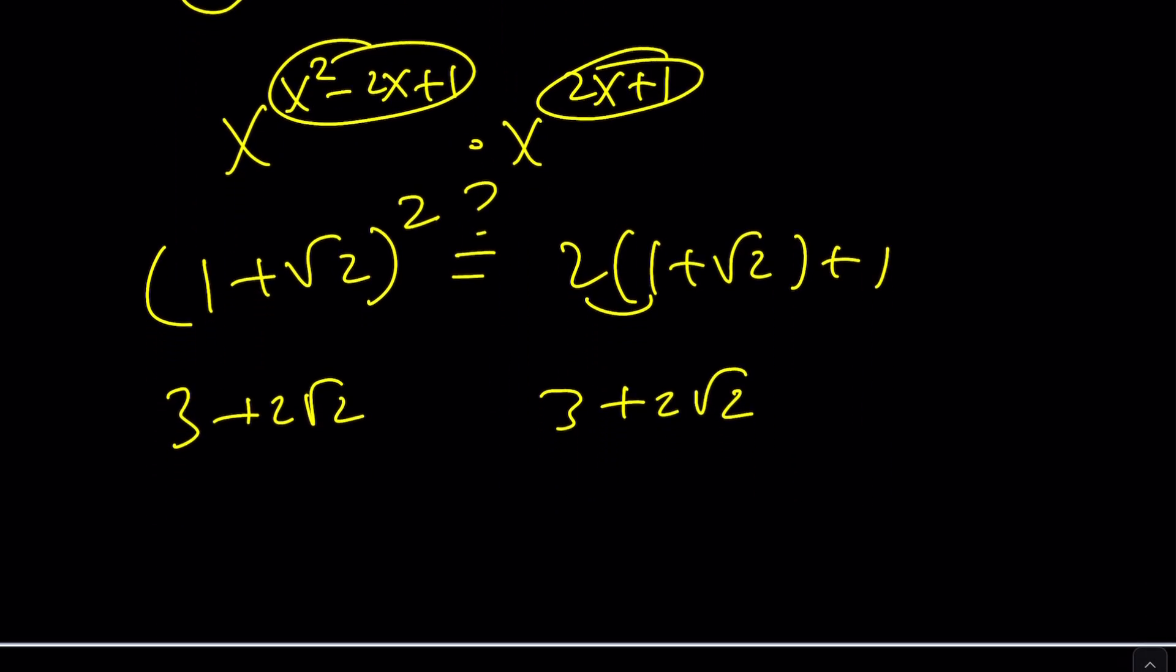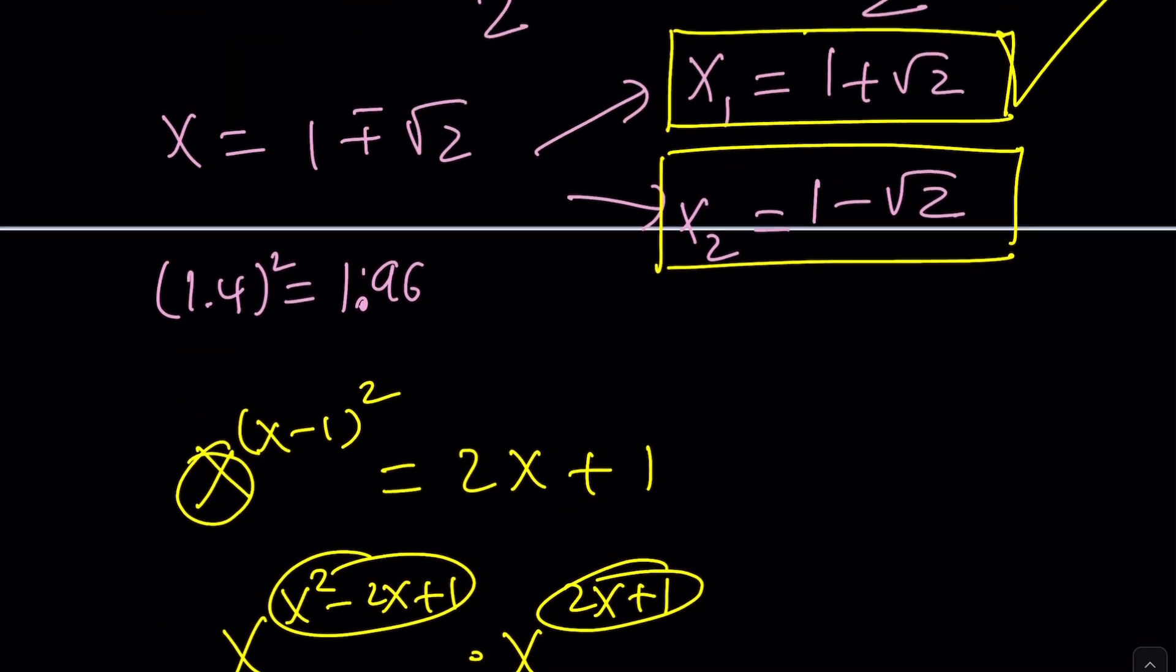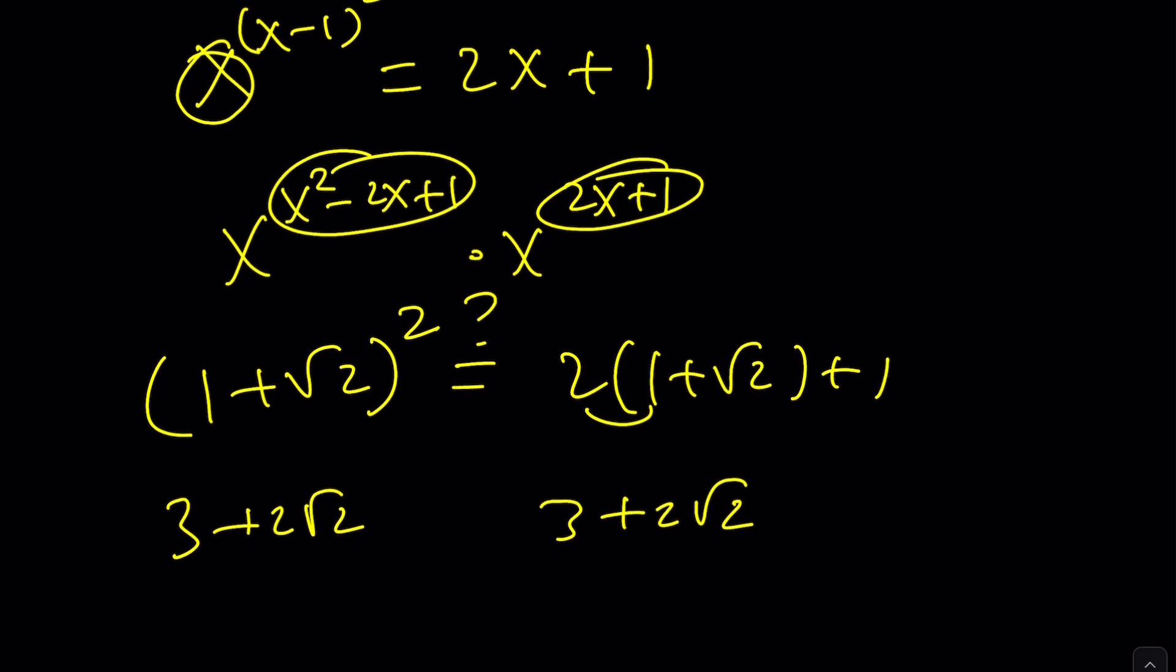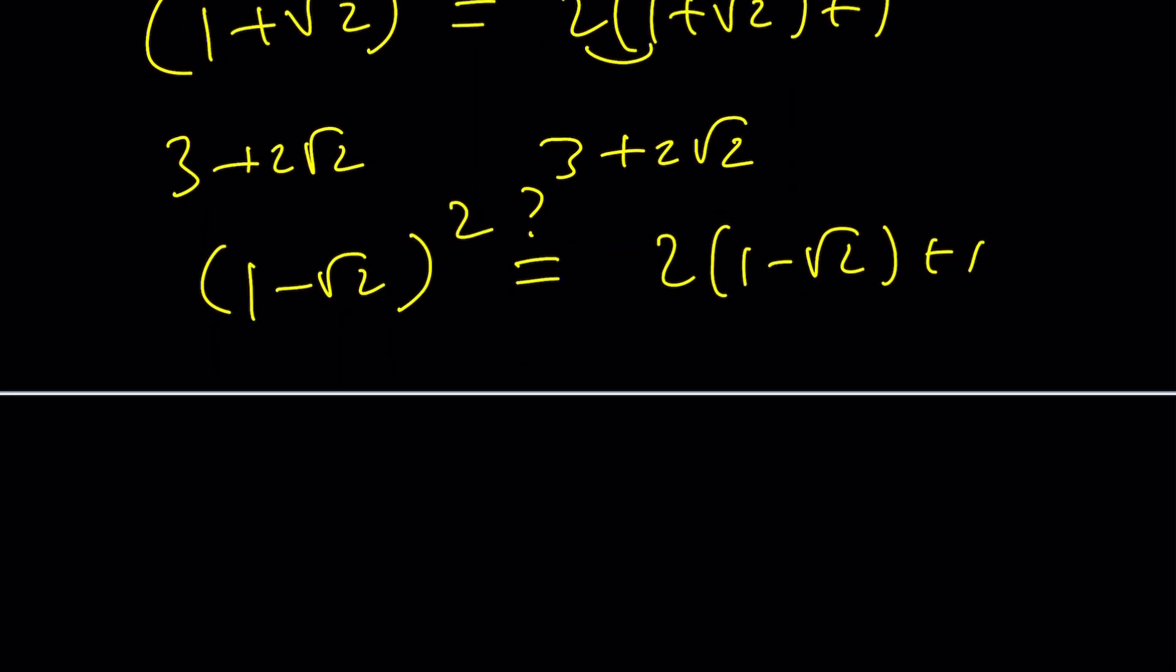What about the other one? Let's check it out. Now, if x is 1 minus root 2, which is negative, so 1 minus root 2 to the power 1 minus root 2 minus 1 is negative root 2 squared. You get 2 again. On the right-hand side, you get 2 times 1 minus root 2 plus 1. Are they equal? Let's check it out. This gives me 3 minus 2 root 2. This gives me 3 minus 2 root 2. So both of these should be solutions. Let's go ahead and check Wolfram Alpha. Let's see what it says. Do you think Wolfram Alpha will agree with us? Or can Wolfram Alpha solve an equation like this? What are your thoughts? Let's check it out.